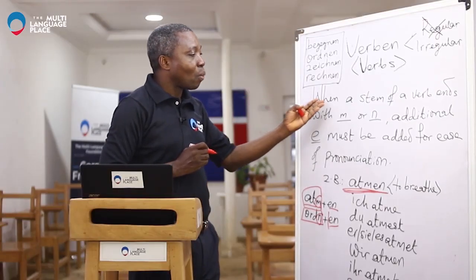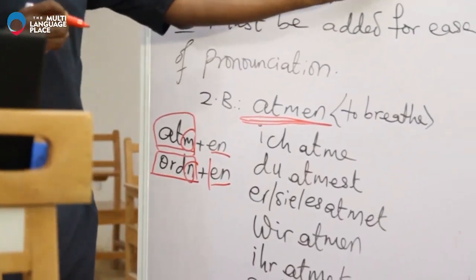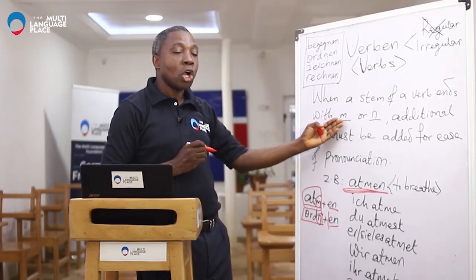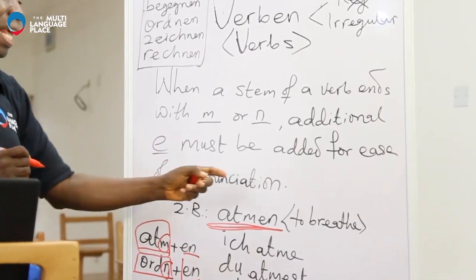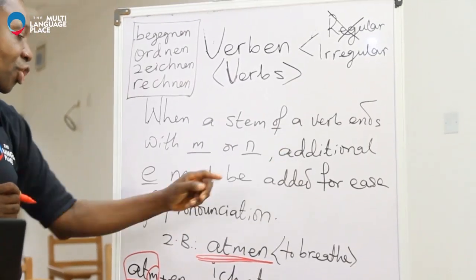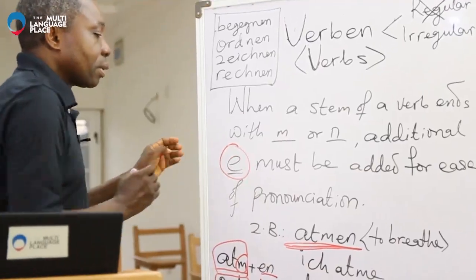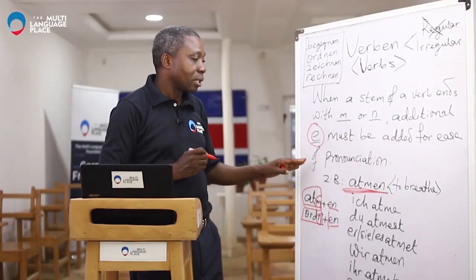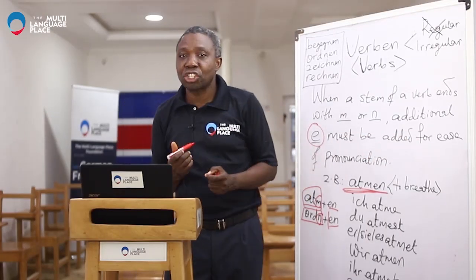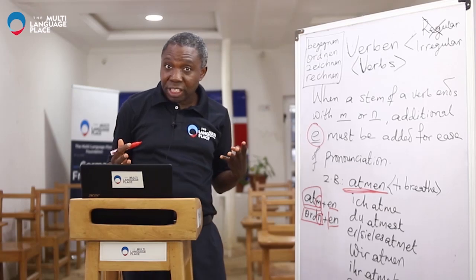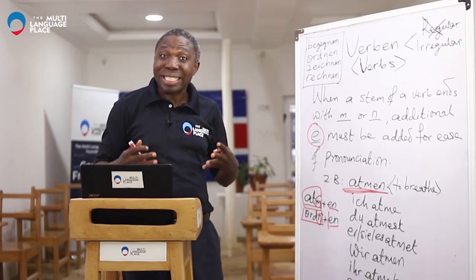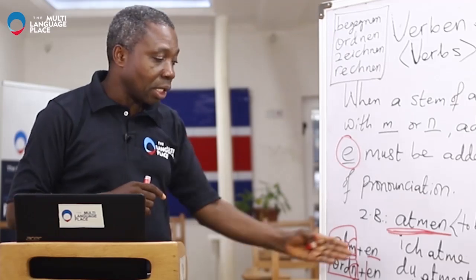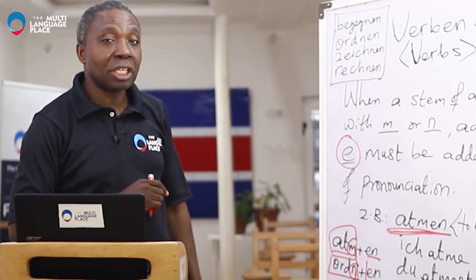When a stem of a verb ends with M or N, an additional E must be added to ease pronunciation — just to make the pronunciation possible and easier. Additional E must be added. Look at the conjugation here.